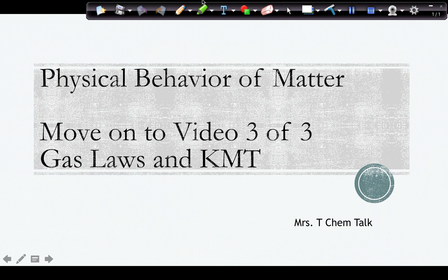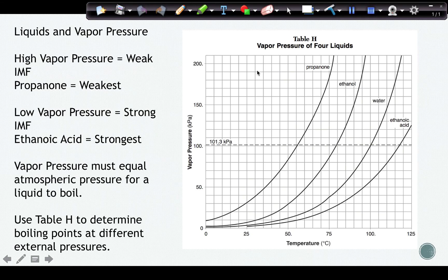We also need to talk about liquids and their vapor pressure. So this is table H from your reference tables. And on table H, we have this graph where we graph vapor pressure versus temperature. So if something has a high vapor pressure, the ones with the higher vapor pressure would be, the highest vapor pressure, I should say, would be propanone. High vapor pressure means weak intermolecular forces. And propanone has the weakest intermolecular force. Propanone also has the lowest boiling point for the same pressure. Low vapor pressure means strong intermolecular forces. So ethanoic acid has the strongest intermolecular forces because it's on the lowest part of the graph for vapor pressure.